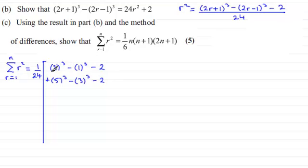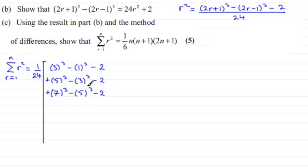I can see that this 3³ is going to cancel with this minus 3³. Let's take it for another value: when r=3, this comes to 7³, so we've got plus 7³, and then we end up subtracting when r=3, 5³, so minus 5³. Yes, you can see this starts to form a pattern — the 5³ cancels with the minus 5³ there, and this 7³ is going to get cancelled with the term further down.